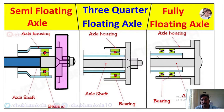In case of the fully floating axle, the axle is freely rotating, whereas the weight of the body of the vehicle is directly supported by the wheel. You can see there are two bearings, and the weight of the body is supported by the hub here while the axle is freely rotating. In case of the three quarter axle, there is a combination of these two — partly load is supported by the wheel.